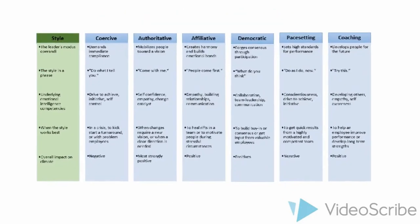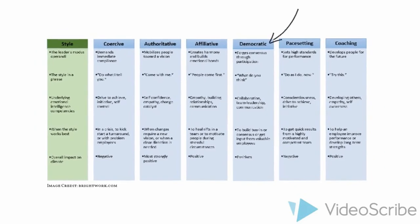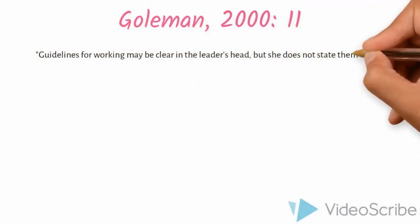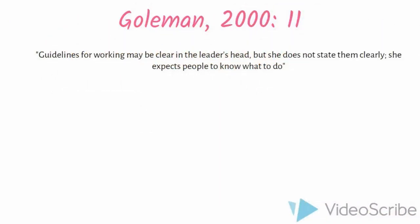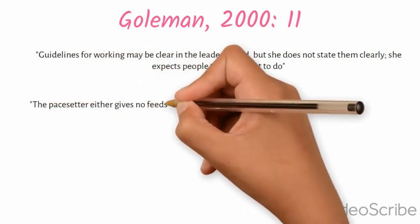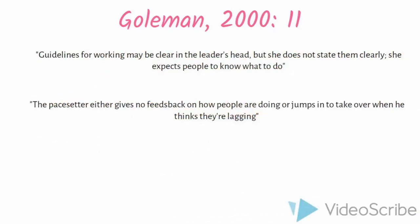I heavily identified with the pace-setting leadership style. I always thought of myself as a democratic, authoritative leader, as I strive to work towards a clear vision — which in the university context is to achieve a high mark — and as I like to make sure to ask for my team members' opinions and ideas. Because of this, I had always seen myself as being very good at teamwork. Little did I notice that my lack of trust crept up on me and led me to resort to a pace-setting leadership style. Two sentences in Goldman's paper opened my eyes: 'Guidelines for working may be clear in the leader's head, but she does not state them clearly — she expects people to know what to do.' And: 'The pace-setter either gives no feedback on how people are doing or jumps in to take over when he thinks they're lagging.'